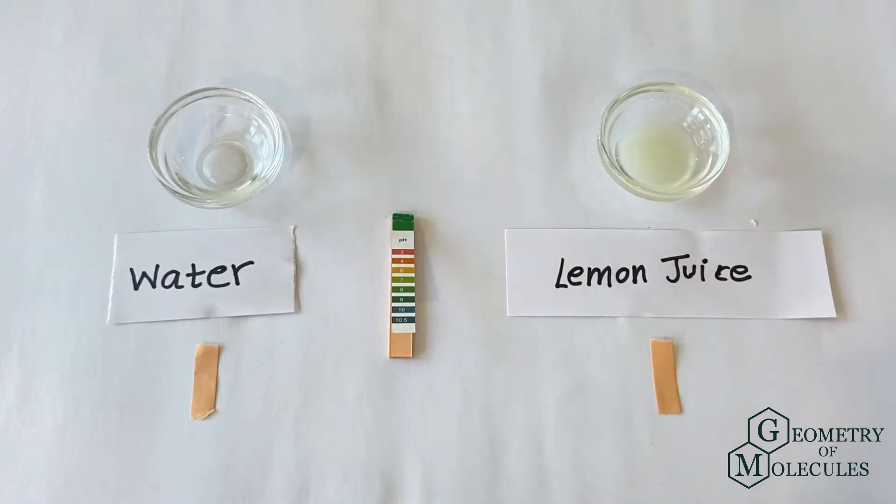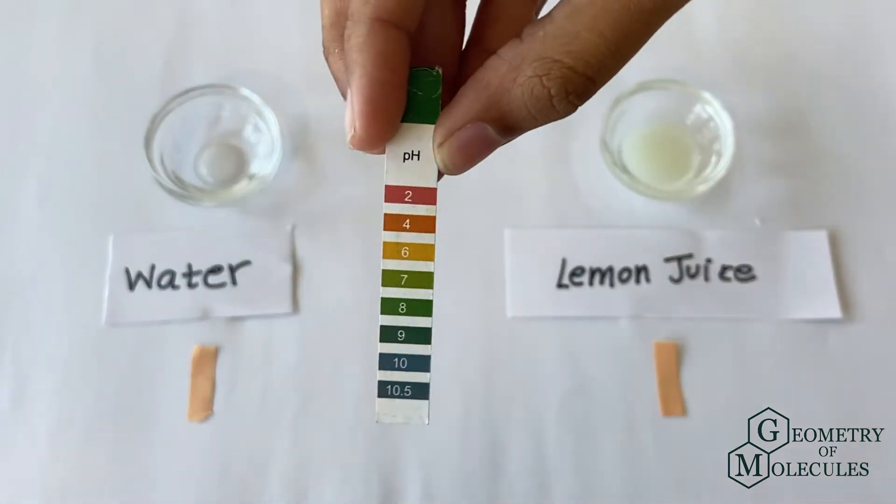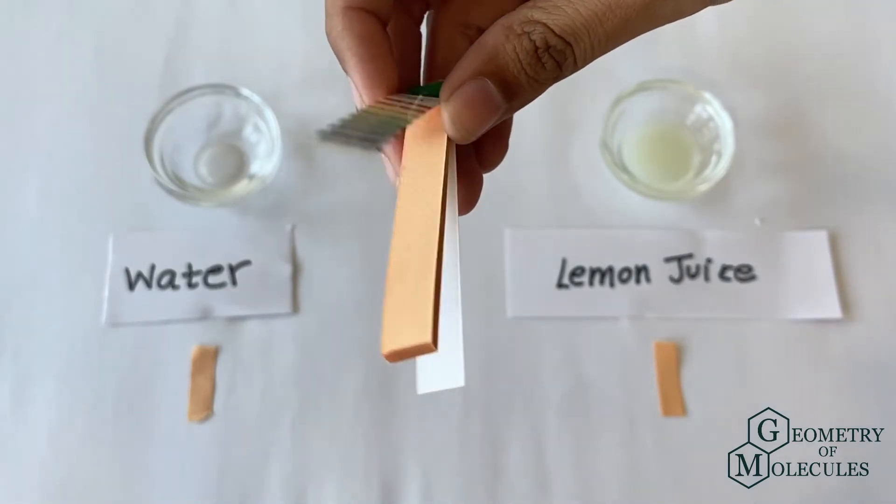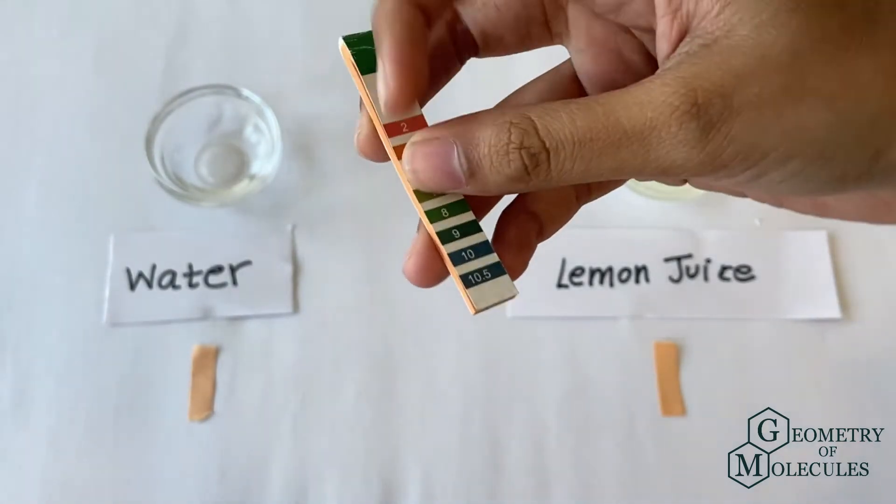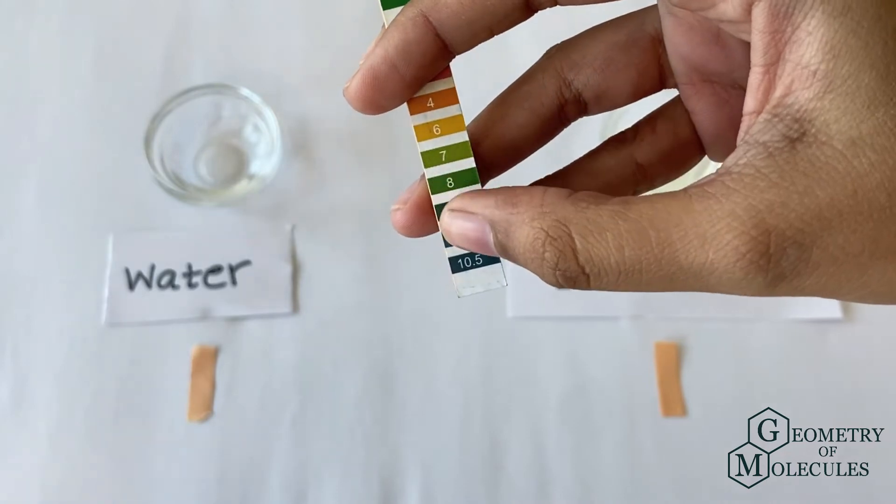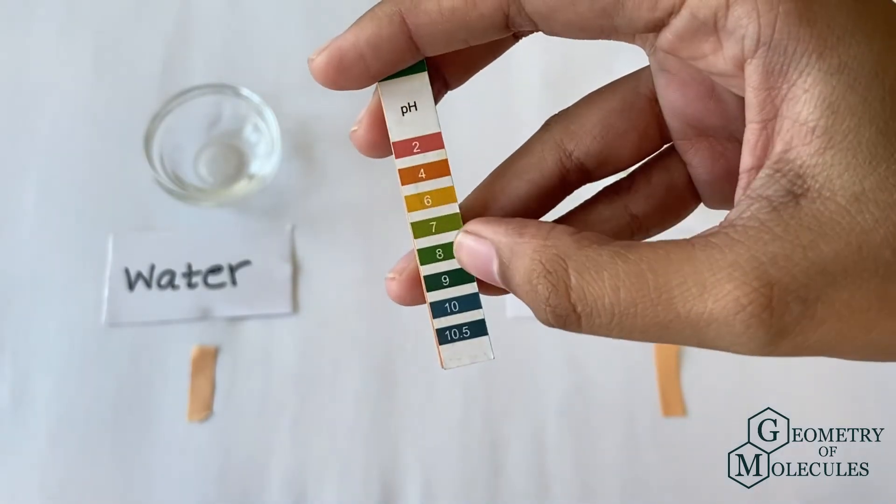This is what a pH strip looks like, and based on the nature of our sample, the strip will change its color. Substances over 7 pH are considered basic, while the ones under 7 are considered acidic.